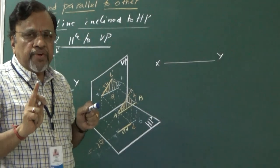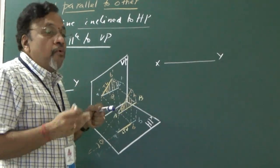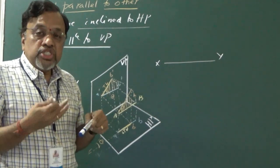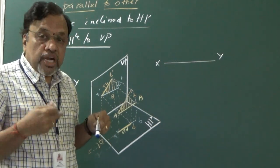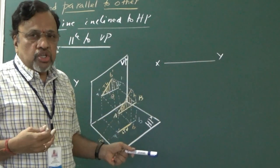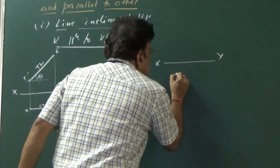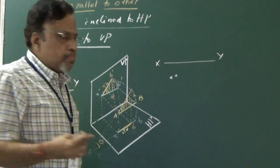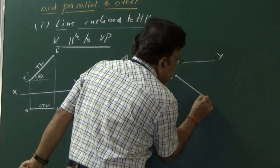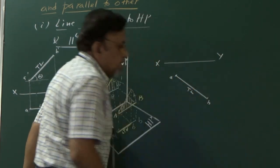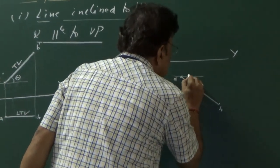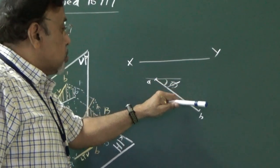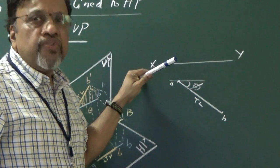How do you draw the projections for this? Whenever you do a problem, start from the view where you know the true length. I said the line is inclined to VP and parallel to HP. Since the line is parallel to HP, the true length is seen in the top view, so I need to start from the top view. Let us say I know the position of end A. I know its inclination phi with VP, so I draw this line at angle phi — this gives true length AB in the top view, and this inclination is phi, the true inclination of the line with reference to VP.